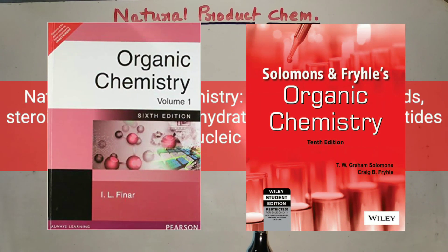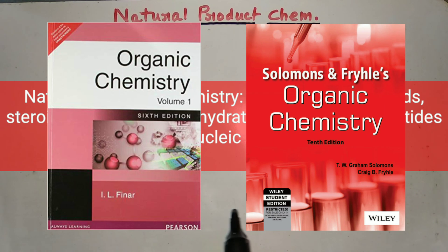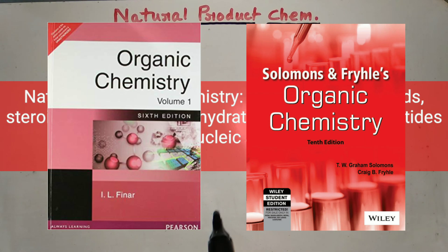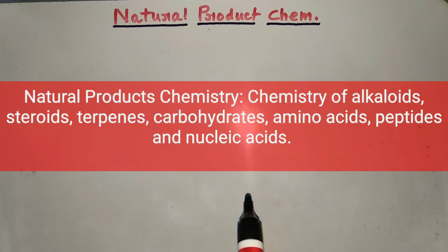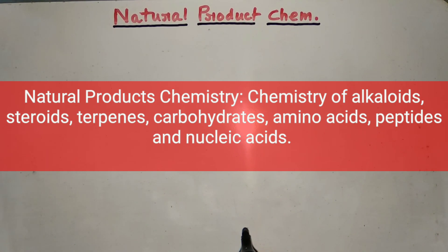I followed the IL Finner organic chemistry book, and from that book I got answers to every question from these chapters. For carbohydrates, amino acids, and peptides, I got everything from IL Finner book. But for nucleic acids, the very well-explained content is in Solomon's organic chemistry book. So you can buy these two books — if you have one or both, that's good, but if you don't, you should buy them, and you can also get them from my blog.